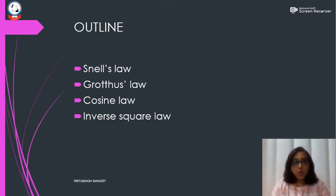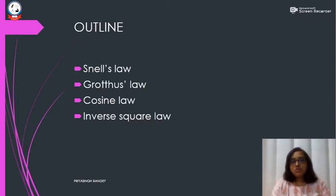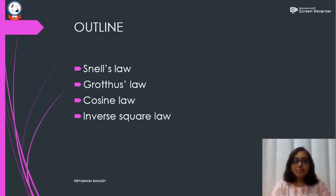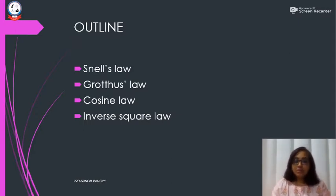As we know, electromagnetic radiations are not something that just travel randomly and have effects randomly — they have certain laws by which they abide. Based on these laws we can understand the traveling pattern of these radiations, the absorption, how they interact with the tissues inside the body, and ultimately the effects they have on the human body. We'll be discussing Snell's law, the Grotus's law, the cosine law, and the inverse square law.